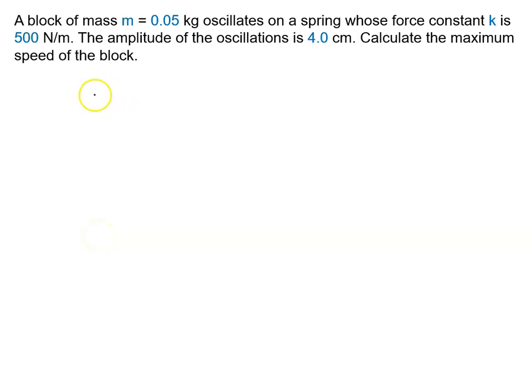A block of mass m equal to 0.05 kilogram oscillates on a spring whose force constant k is 500 newton per meter. The amplitude of oscillation is 4 centimeter or 4 by 100 meter. This is basically a spring block system. Calculate the maximum speed of the block.